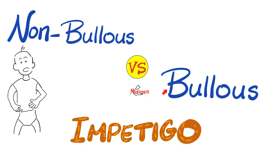What is going on? It's Medicosis Perfectionatus, where medicine makes perfect sense. Let's continue our microbiology and infectious diseases playlist. In the last video we talked about Staphylococcus saprophyticus. Today we'll compare between non-bullous impetigo and bullous impetigo. Let's get started.